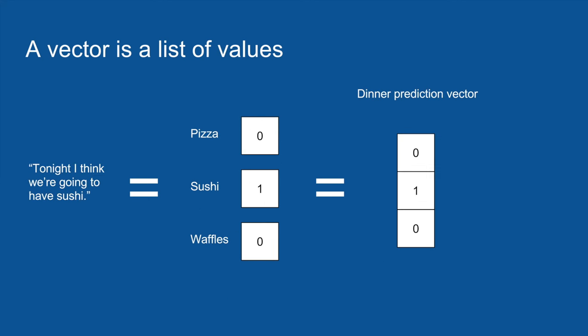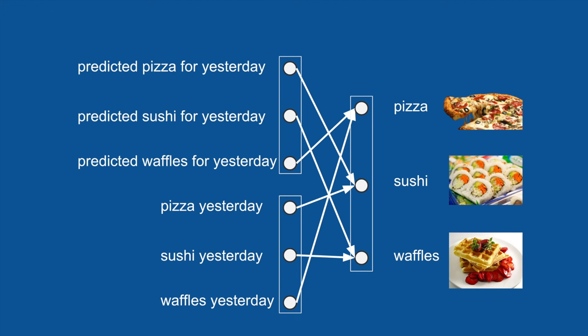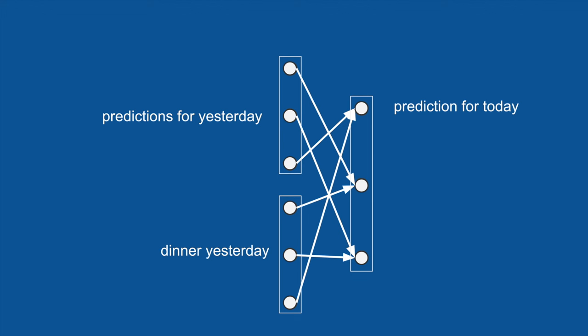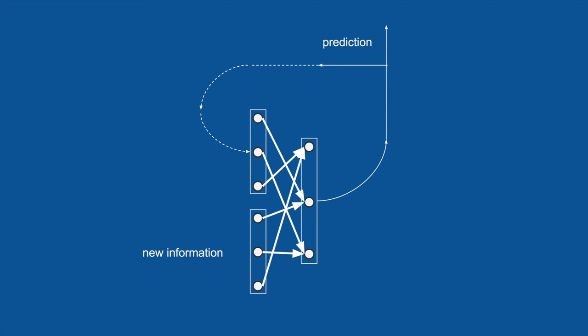So we can make a one-hot vector for our prediction for dinner tonight — setting everything equal to zero except for the dinner item we predict, in this case sushi. Now we can group our inputs and outputs into vectors, separate lists of numbers, as a useful shorthand for describing the neural network. We have our dinner-yesterday vector, our predictions-for-yesterday vector, and our prediction-for-today vector. The neural network is just connections between every element in each of those input vectors to every element in the output vector. To complete the picture, the prediction for today gets recycled — held on for a day and reused tomorrow as yesterday's predictions.